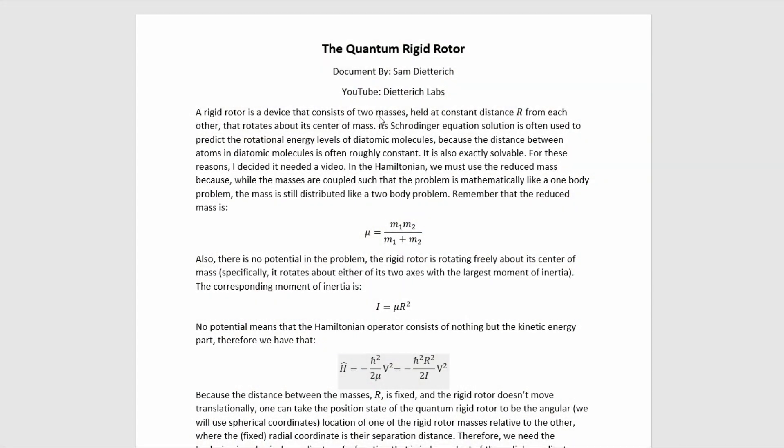A rigid rotor is a device that consists of two masses held at a constant distance r from each other that rotates about its center of mass. Its Schrödinger equation solution is often used to predict the rotational energy levels of diatomic molecules because the distance between atoms in a diatomic molecule is often roughly constant. Also, this Schrödinger equation problem is exactly solvable. For these reasons, I decided it needed a video on my YouTube channel. This is that video.